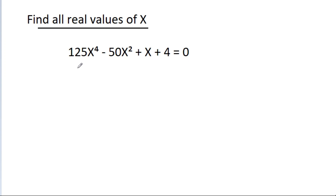In this video, we have given that 125x⁴ - 50x² + x + 4 is equal to 0, and we have to find all real values of x.